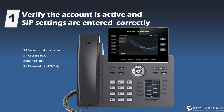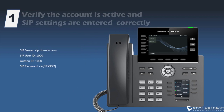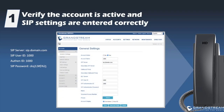The SIP settings are provided by your VoIP carrier or the IP PBX administrator. The IP phone web interface can be accessed by typing the IP address of the phone in your browser's search bar. Make sure you log in with the username 'admin' and the associated password. The SIP settings are entered under the Account > General Settings page.